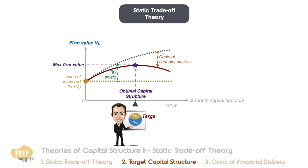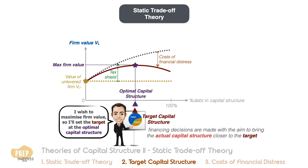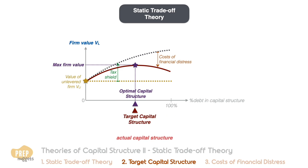A firm's target capital structure is the structure that managers use over time when making decisions about how to raise additional capital. For managers trying to maximize firm value, the target capital structure should be the same as the optimal capital structure, and the firm often makes financing decisions that aim to bring the actual capital structure closer to the target. In practice, however, the actual capital structure tends to fluctuate around the target.